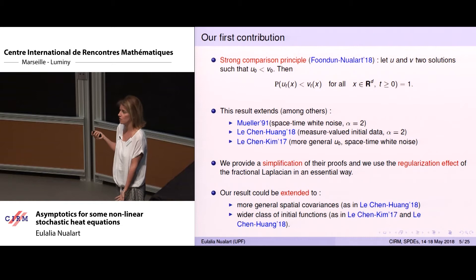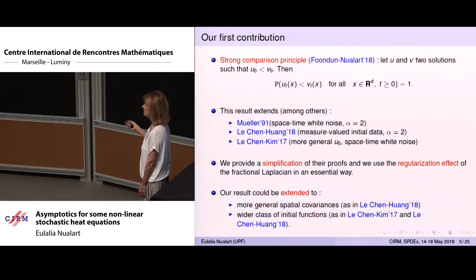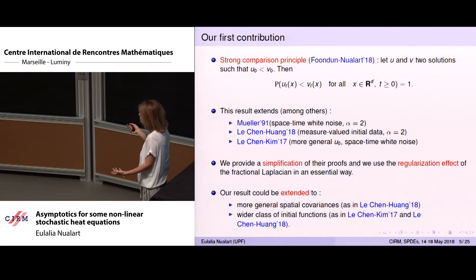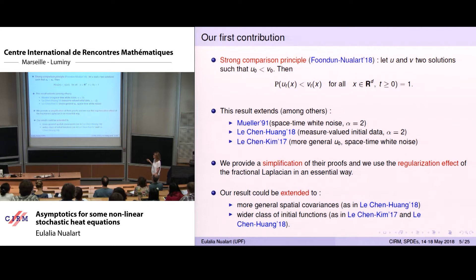Our first contribution is to provide a strong comparison principle for this equation, which was not known until now. We proved that if the solutions are strictly comparable initially, then the solutions are strictly comparable. We follow the proofs by Mueller, Le Chen, and Le Chen and Kim, but when extending to the fractional Laplacian the approach only works for alpha bigger than one. So we use a new idea: a regularization effect of the fractional Laplacian. Moreover, these proofs are technical, and we were able to provide a simplification.